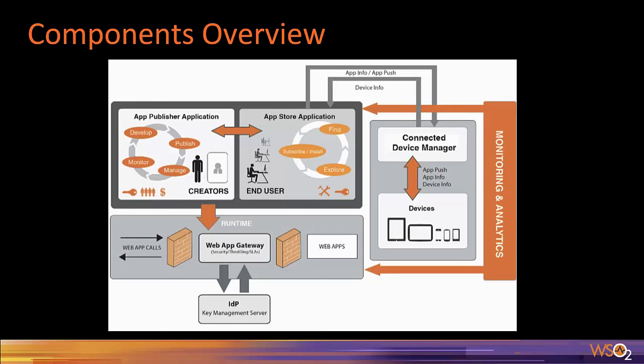AppManager comes with four major components: Publisher, AppStore, AppGateway, and IDP. AppPublisher is the web interface for app providers to publish web applications, mobile applications, manage their life cycles, share documentations, and visualize statistics on app usage and quality. AppStore is the end user portal where end users can sign up, discover applications, subscribe to them and access them, and also rate and evaluate applications.